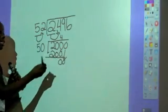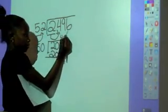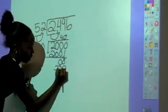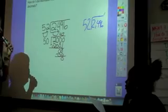4 times 50 equals 200. We subtract, we get 0. Bring down your 0.